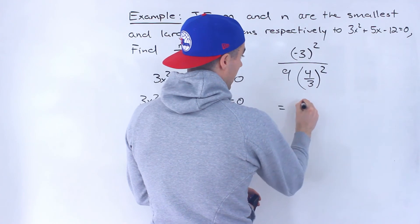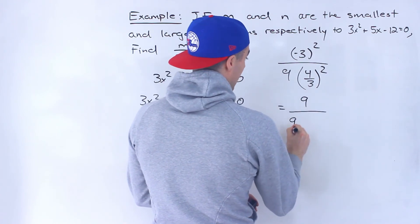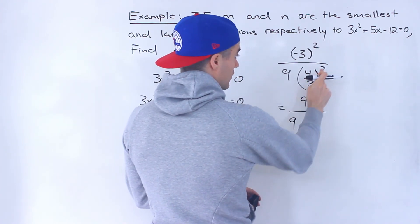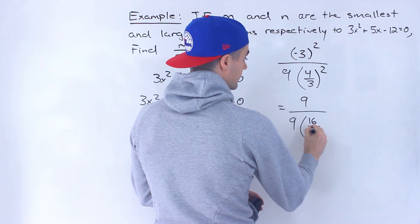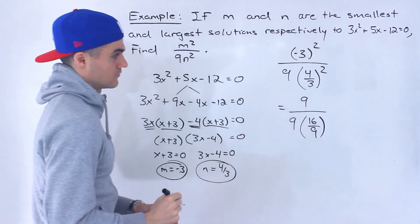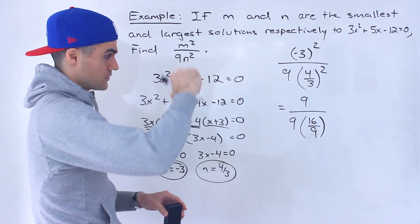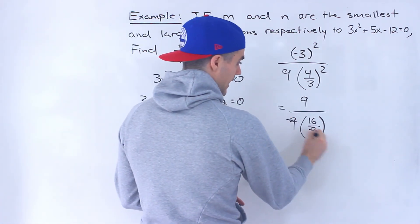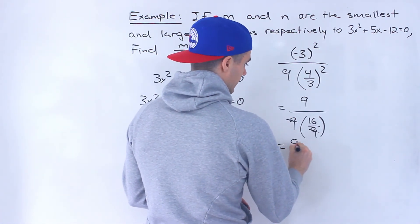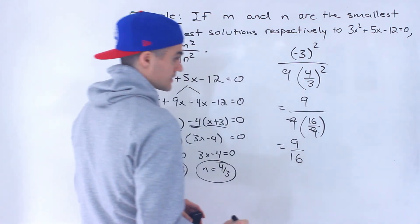And so we'd end up here having 9 over 9. 4 over 3 to the power 2 would be 16 over 9. You take the numerator to the power 2 and the denominator, and then from here notice the 9's cancel out. We're left with 9 over 16.